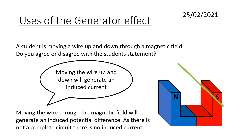Moving that wire up and down through that magnet will cut through magnetic field lines and therefore we will induce a potential difference. However, there is no complete circuit visible, and if there's no complete circuit then there will be no induced current. If the circuit was complete then yes, we would indeed get an induced current because of the induced potential difference.